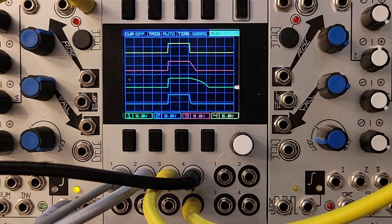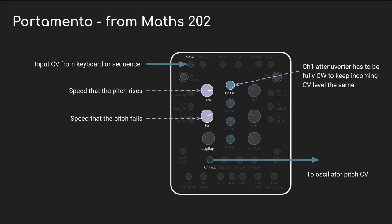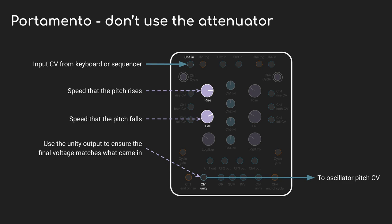And with that, let's get on to some sample patches. Portamento is pretty much the default explanation of what slew is, but I've already talked about it in my Maths 202 video. I wanted to come back to it though, because I made a bit of a mistake. In the diagram I used, I specify that you need to turn the attenuverter all the way clockwise to make sure you get the same pitch CV out as you sent in — the attenuator will reduce the pitch. But just a minute ago I told you about the unity output, which by definition keeps the voltage at the same level. So that's the safer route for something like portamento.